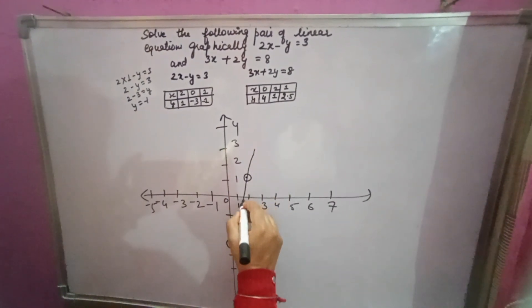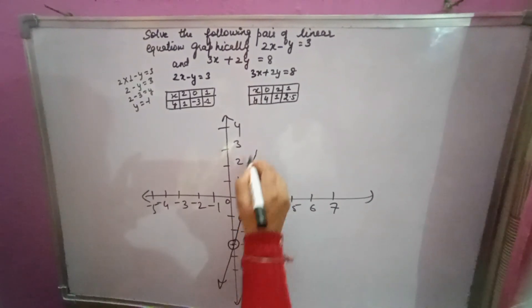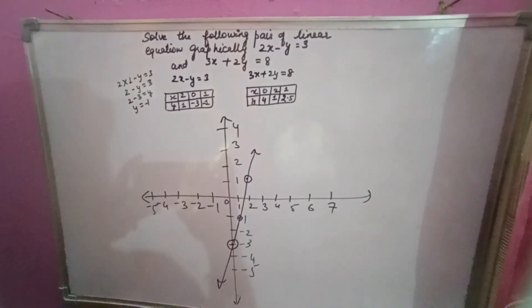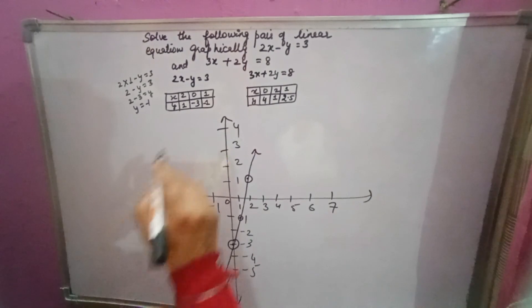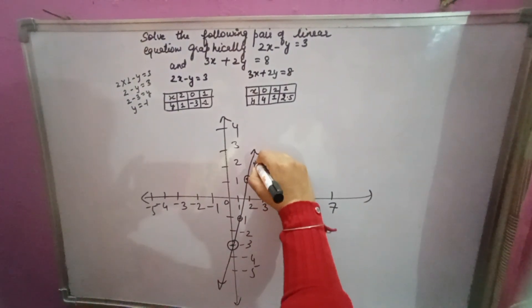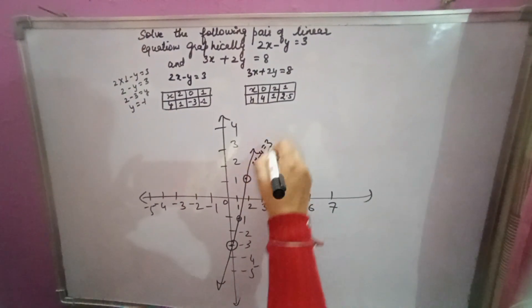With the help of a scale you have to join it carefully. So you will get like this point. Now you can write here the equation 2x minus y equals 3. Because it is a graph, let us write this.